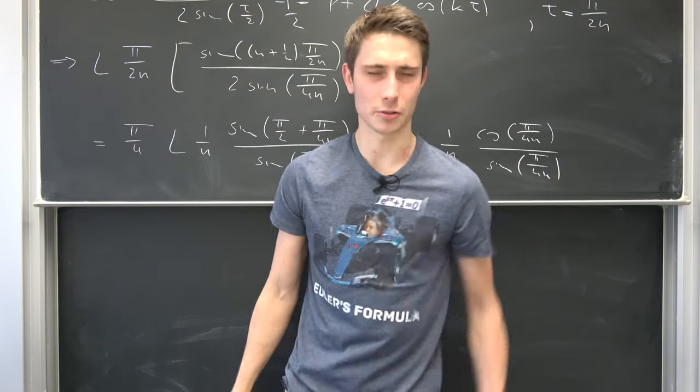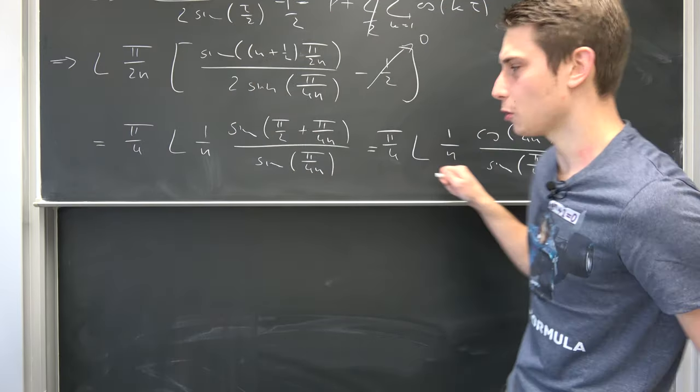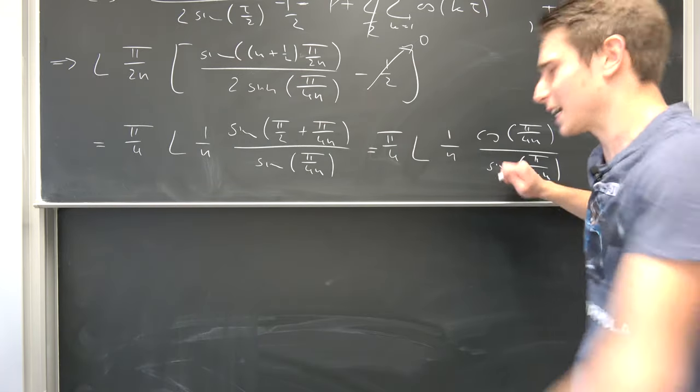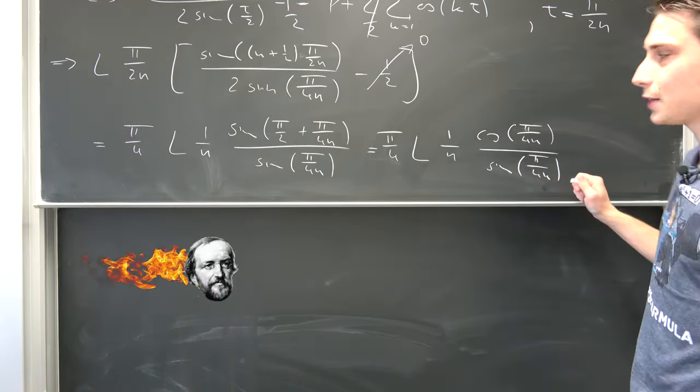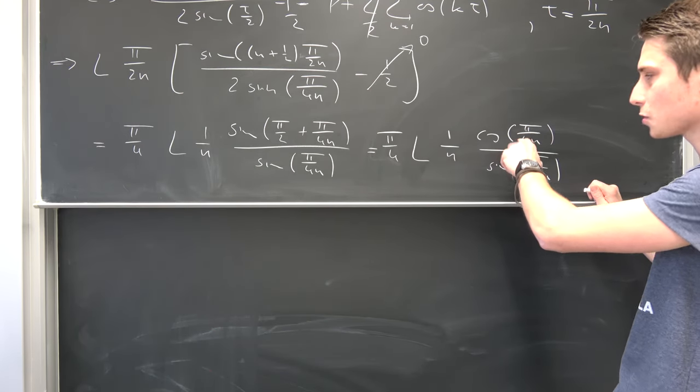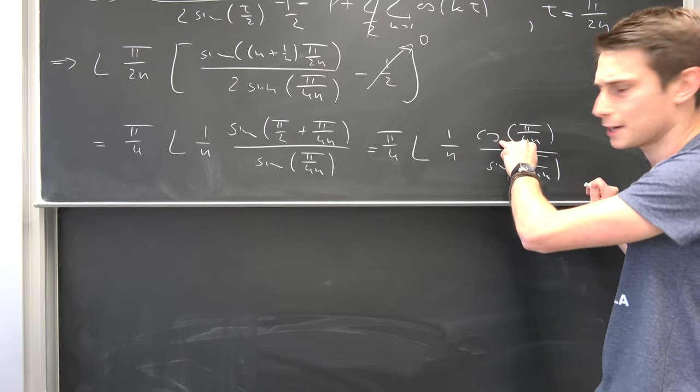And as always, I'm going to do something really forbidden amongst mathematicians. I'm going to use small angle approximations because I don't want to drag this out forever. When n approaches infinity, this is going to be 1 over infinity, which is 0. So this is a really small angle of cosine in the limit.